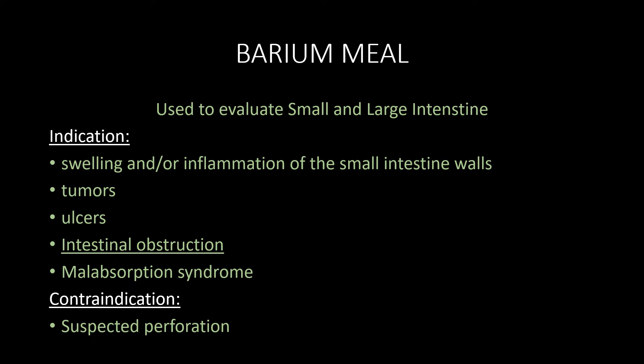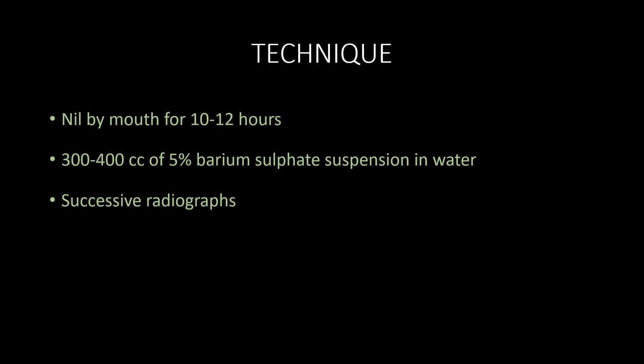Barium meal is generally used to evaluate the small and large intestine. The patient is kept nil by mouth for 10 to 12 hours. Then, on the day of the procedure, 300 to 400 ml of 5% barium sulphate suspension in water is given to the patient, and successive radiographs are taken. The barium medium reaches the ileocecal region in 3 to 4 hours, the hepatic flexure in 6 hours, the splenic flexure in about 9 hours, the descending colon in 11 hours, the sigmoid colon in 16 hours, and is usually evacuated in 16 to 24 hours.